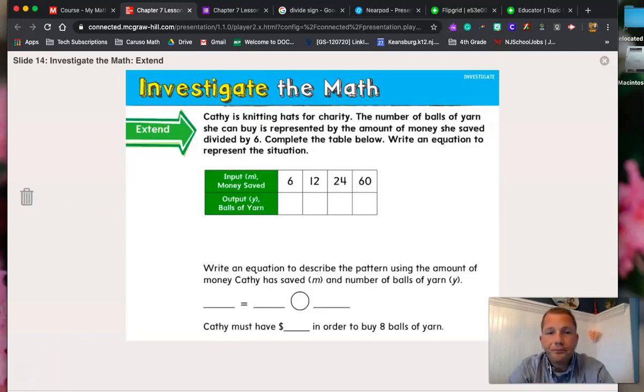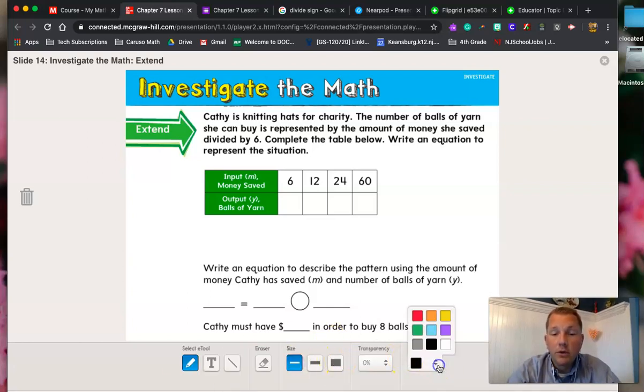Kathy is knitting hats for charity. The number of balls of yarn she can buy is represented by the amount of money she saved divided by six. So this one's actually telling us inside of it what we're going to be doing with this problem. We are going to be dividing by six, it tells us right inside the chart here.